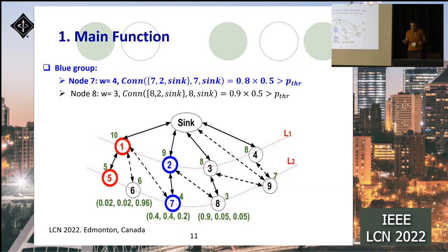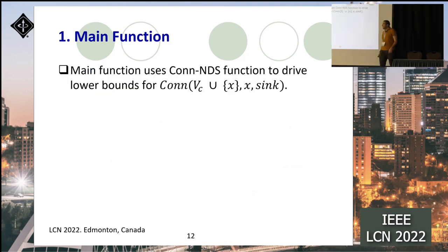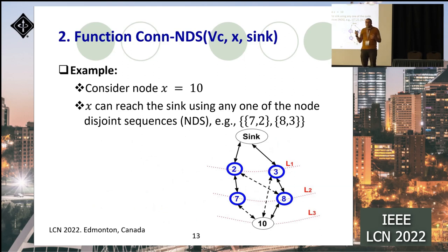A key component of the main function's decision process is how to estimate the reliability metric. As discussed, computing it is #P-complete. Therefore, we propose and develop a function called Connect Node Disjoint Sequence to derive lower bounds for the reliability metric, which can help in the decision process. The main idea is to construct a maximal set of node-disjoint sequences that allow a node to reach the sink, and then use these sequences to derive a lower bound for the reliability value.